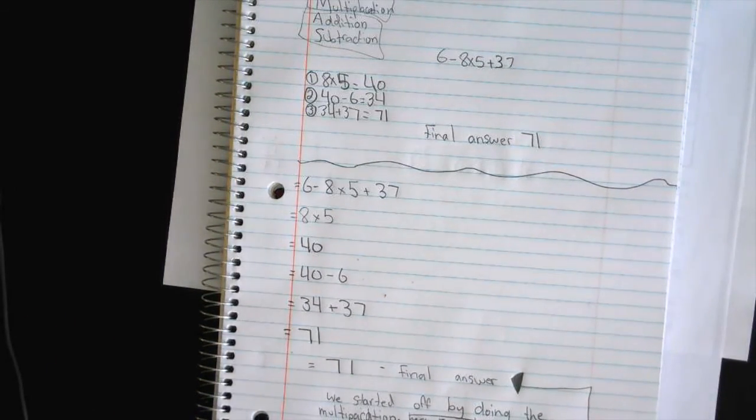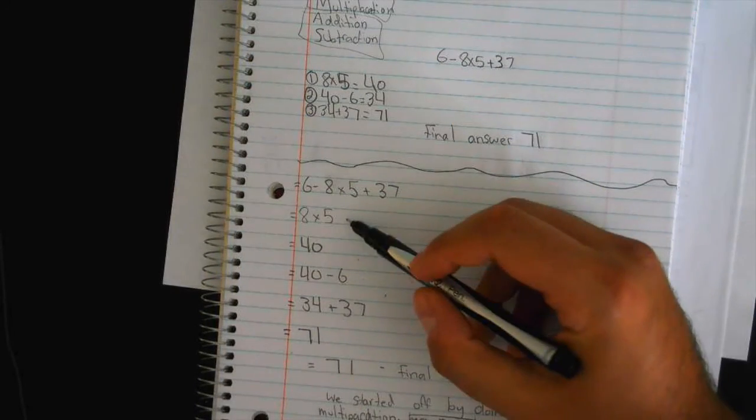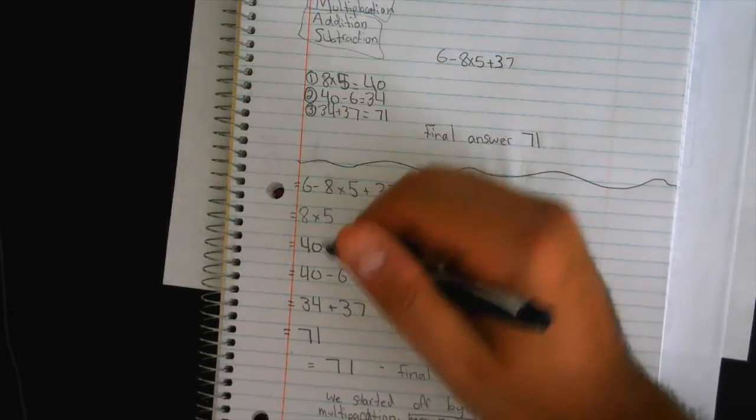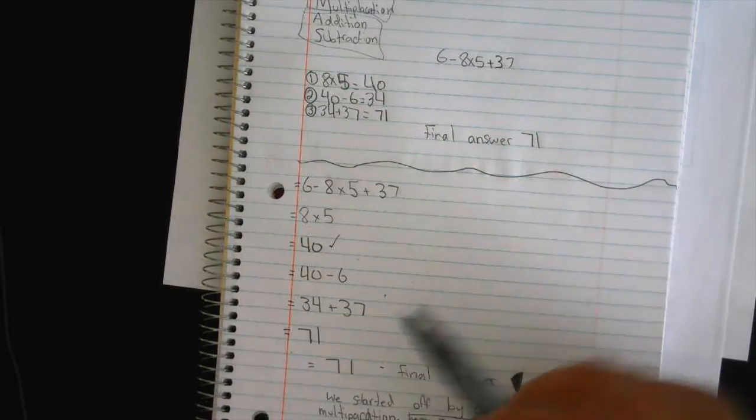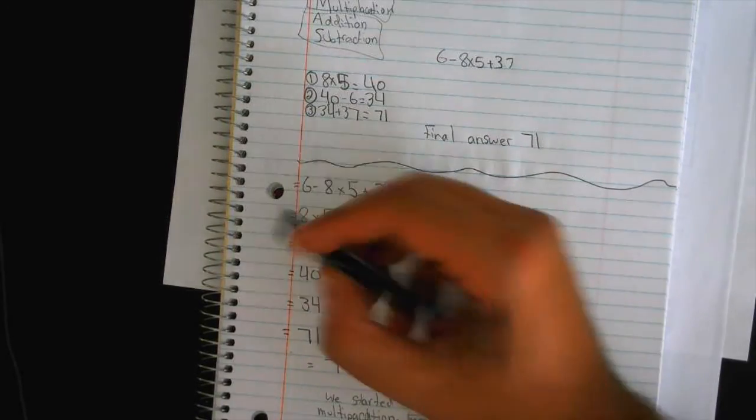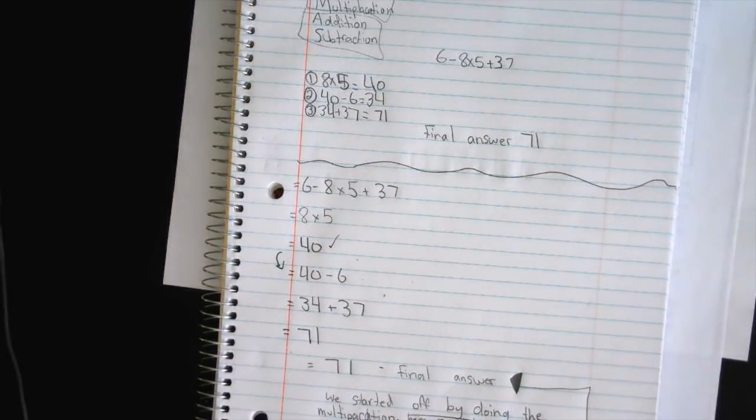Okay. So this group, the first thing they did again was the multiplication, so this is correct. However, this step here, is this step correct?